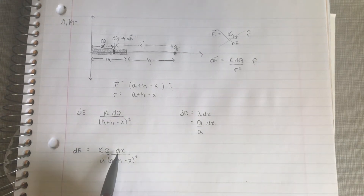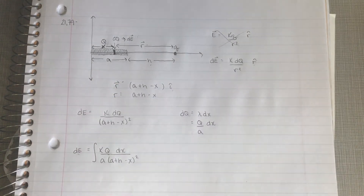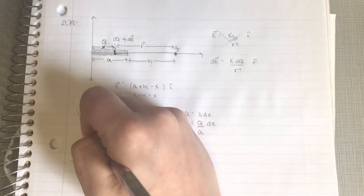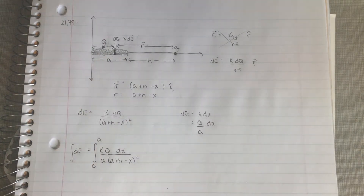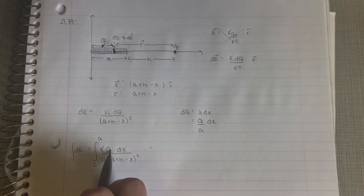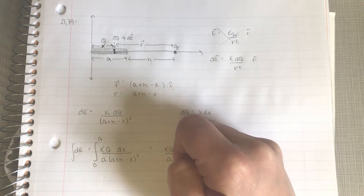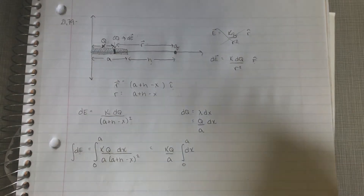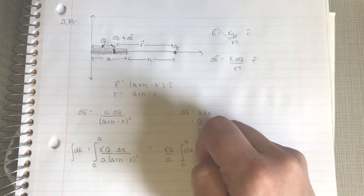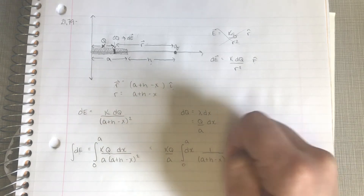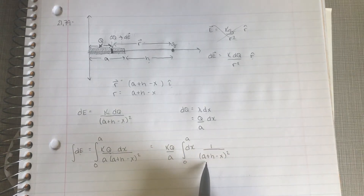Now we have an expression for the electric field of one little slice, and we want to add up all the slices using an integral. The integral goes from 0 to a — from the beginning to the end of the bar. So now we get to practice our math skills. k, Q, and a are constants so we pull those out, and we're integrating 1 over (a plus h minus x) squared dx from 0 to a.